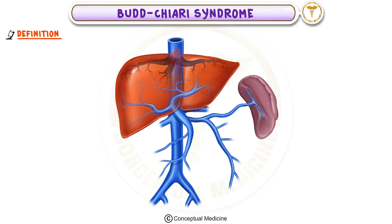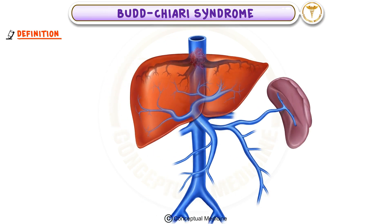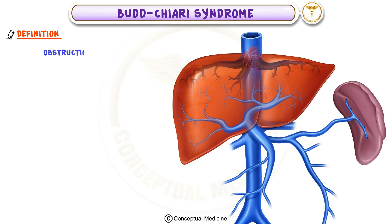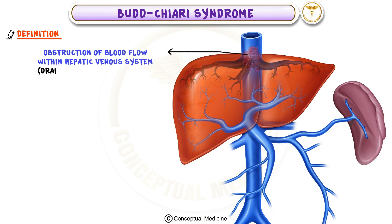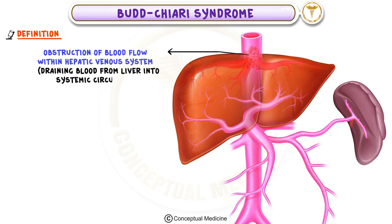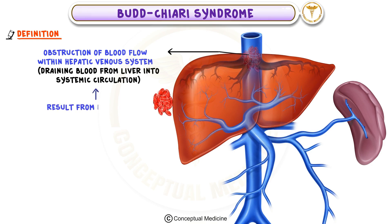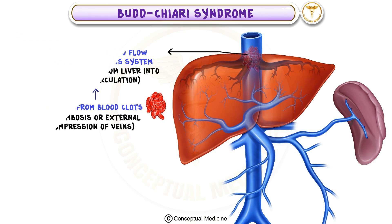Budd-Chiari syndrome occurs when there is an obstruction or blockage of blood flow within the hepatic venous system, which is responsible for draining blood from the liver into the systemic circulation. This obstruction can result from blood clots, known as thrombosis, or external compression of the veins.